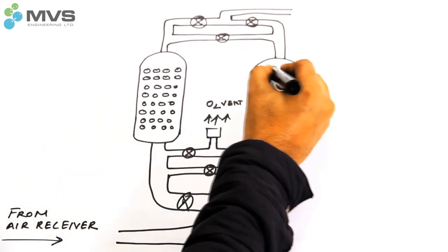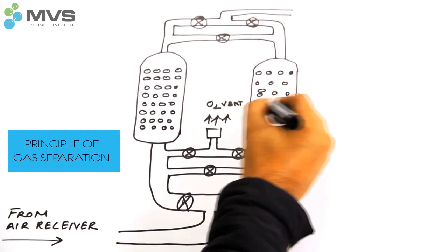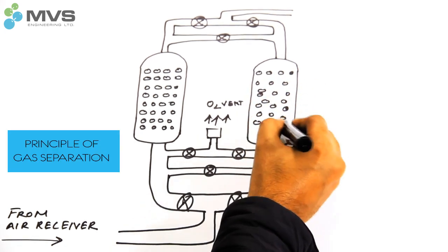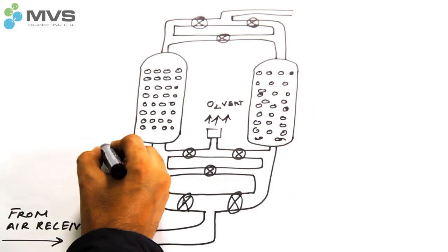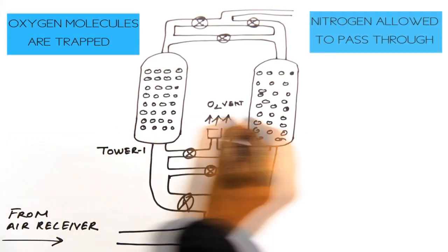PSA nitrogen generation technology works on the principle of gas separation by passing air through molecular sieves where oxygen molecules are trapped and the nitrogen is allowed to pass through.